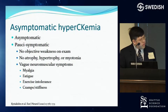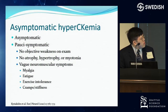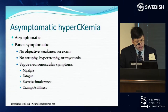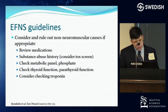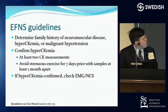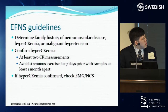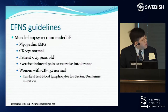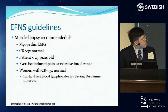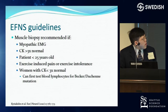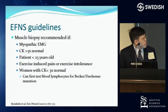Asymptomatic hypercKemia is defined as either no symptoms or having no weakness, atrophy, hypertrophy, myotonia, or only vague symptoms. The approach is to rule out non-neuromuscular causes, check family history, confirm the elevation is real with at least two measurements without prior exercise. If still elevated, check an EMG. A biopsy is recommended if the EMG is positive, CK is three times normal, the patient is young (higher muscular dystrophy risk), there's exercise intolerance suggesting metabolic myopathy, or if the patient is a woman with lower-level elevations who may be a carrier for muscular dystrophy.